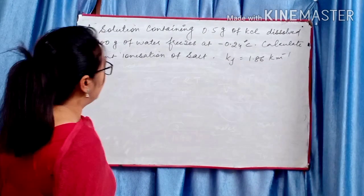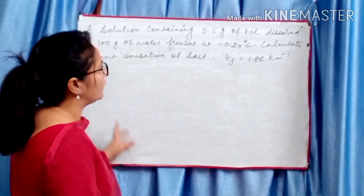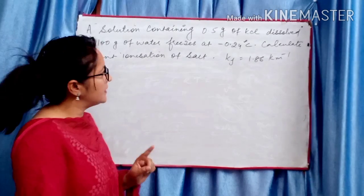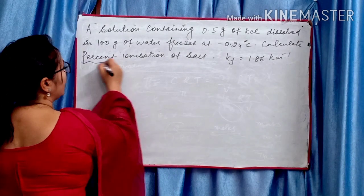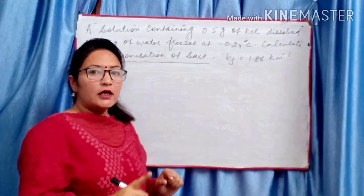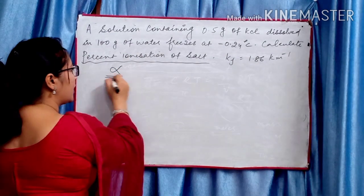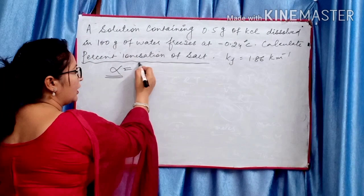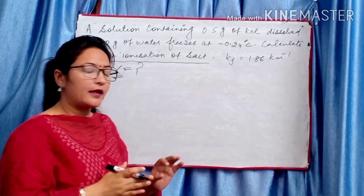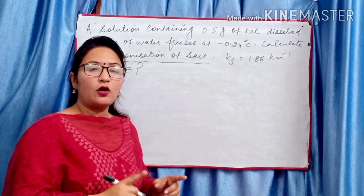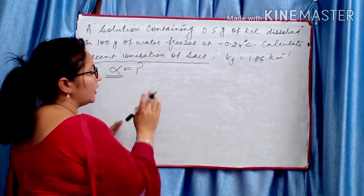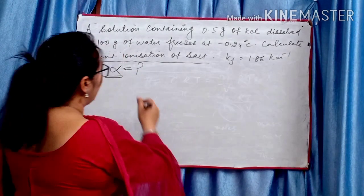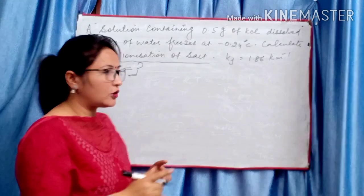Third type: A solution containing 0.5 gram of KCl dissolved in 100 grams of water freezes at -0.24°C. Calculate percent ionization. Percent ionization means find degree of ionization (alpha) first, then multiply by 100 to get percent. To find alpha, we need the value of i.